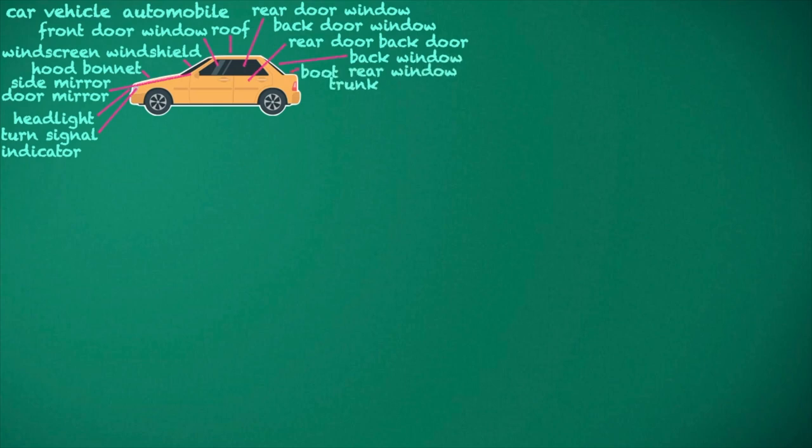Boot, trunk. Brake light. Bumper. Muffler. Tire, wheel. Door handle.